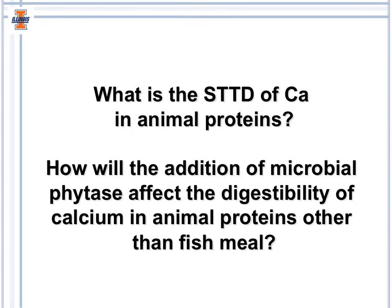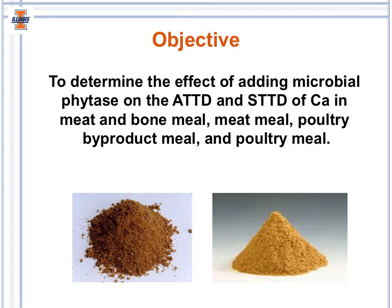After reviewing this data, we have a couple of questions. First, what is the standardized total tract digestibility of calcium in feed ingredients of animal origin, and how will the addition of microbial phytase impact the digestibility of calcium in animal proteins other than fish meal? Therefore, the objective of the present study was to determine the effect of adding microbial phytase on the apparent and standardized total tract digestibility of calcium in meat and bone meal, meat meal, poultry byproduct meal, and poultry meal.